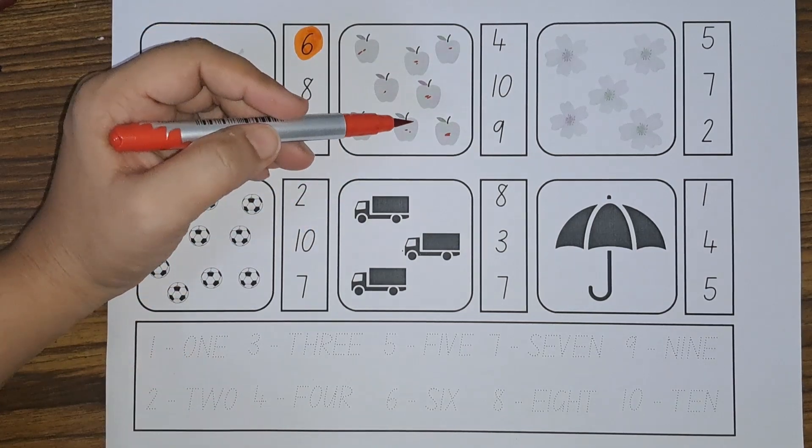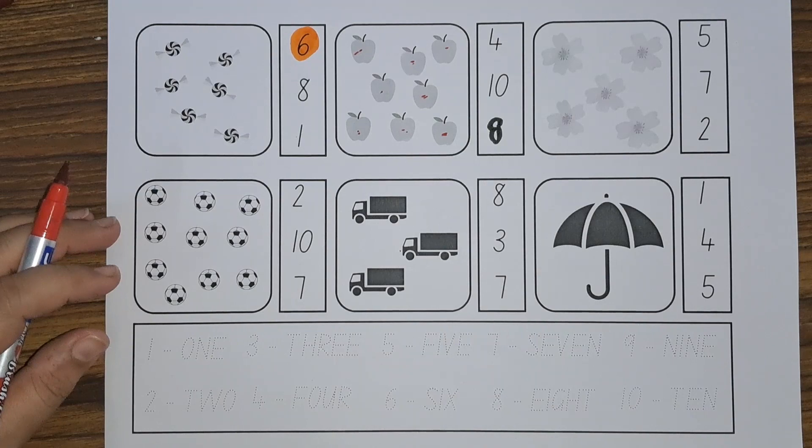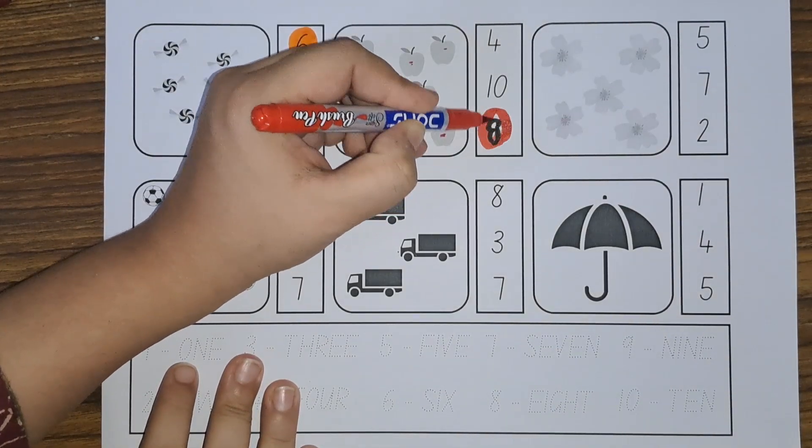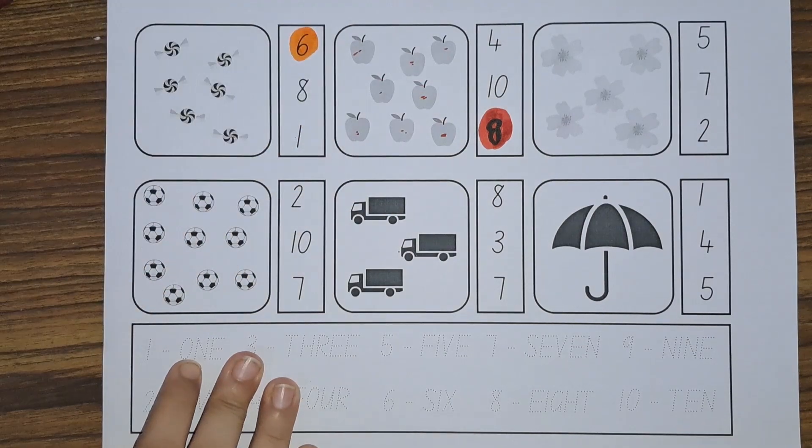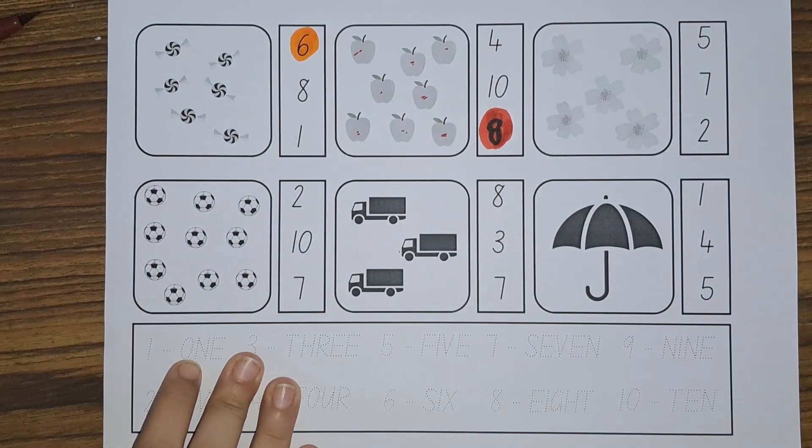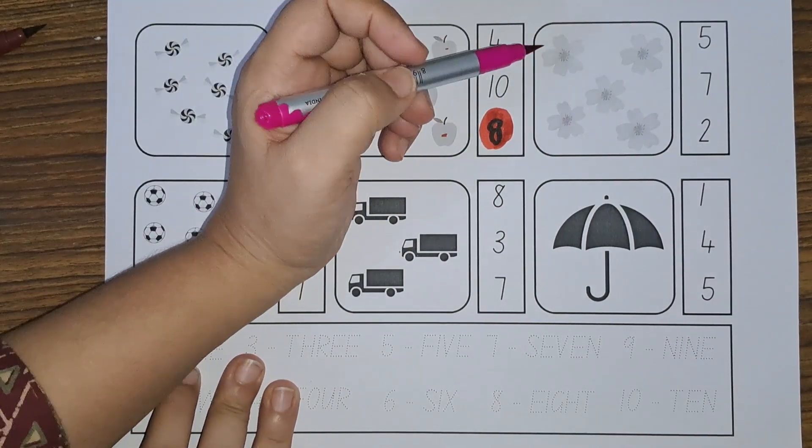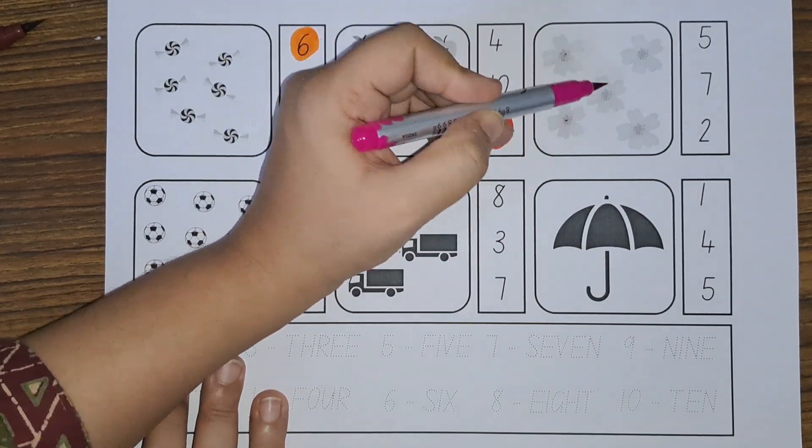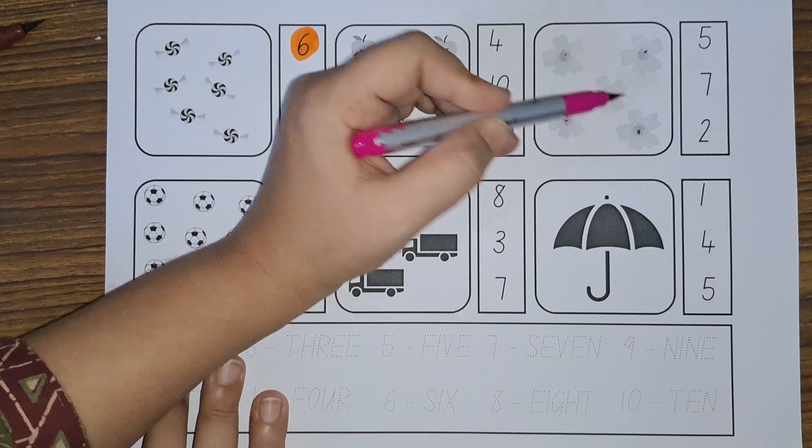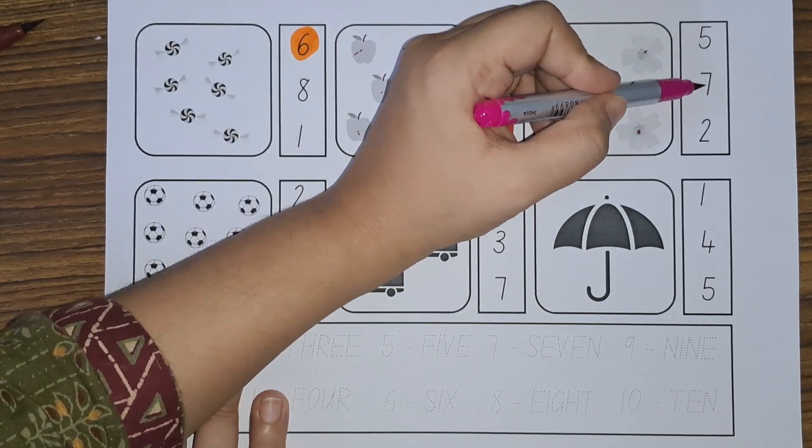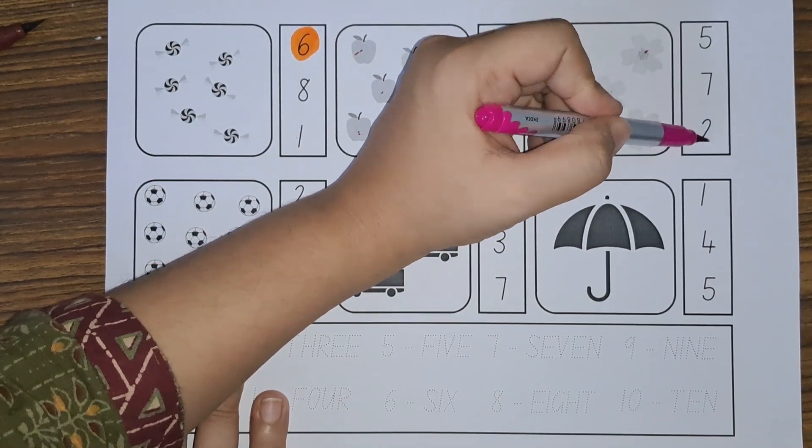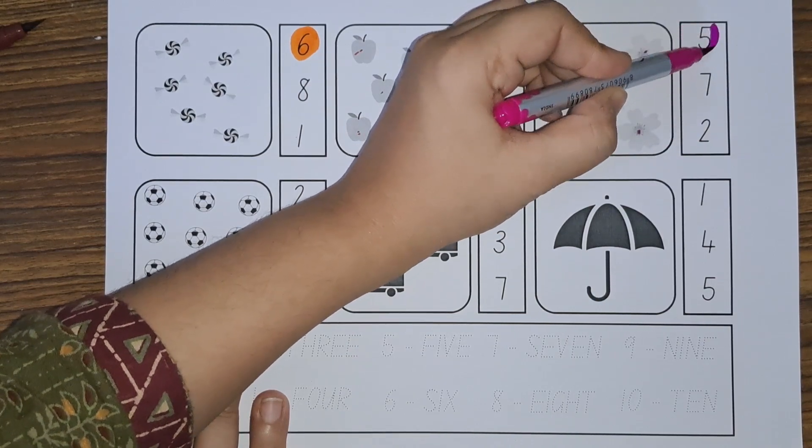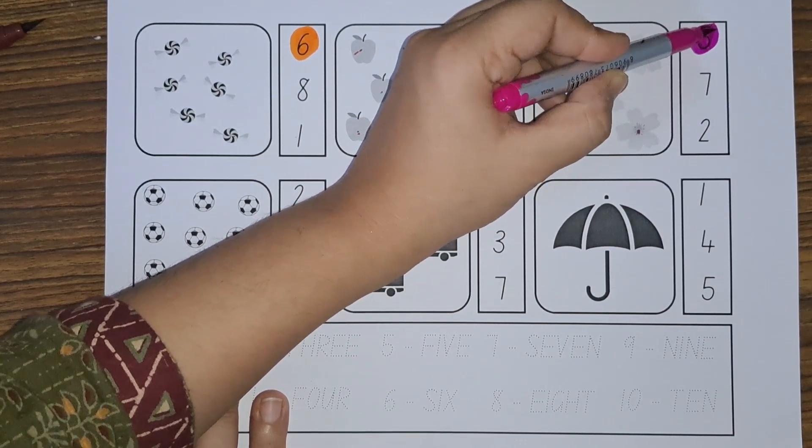Next we have flowers. Let's count how many flowers we have: one, two, three, four, five. Is this five? No. Is this five? No. Is this five? Yes. Five flowers.